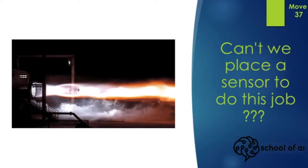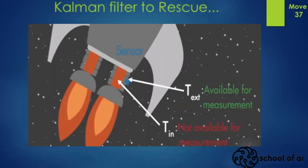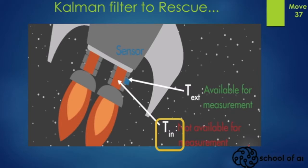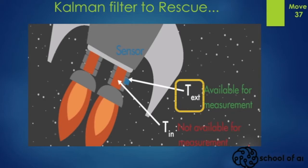Let's see how we can solve this problem. This is an expanded view of a spacecraft engine. The orange colored area is the combustion chamber — this is where the fuel is being burnt to create the thrust. We cannot have the sensor inside, but we can have it as close as possible to the chamber. T_in is the internal temperature that we want but is not available for measurement. T_external is the measurement that is available. In this situation, we can use the Kalman filter to find the best estimate of the internal temperature from what we can measure.